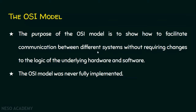If there are two different systems that want to communicate — for example, one running Windows and another running Linux — our protocols should convert the data in such a way that any operating system can understand it. So communication between different systems should be facilitated without requiring changes to underlying hardware and software. Whether one system uses Motorola architecture and another uses Intel architecture, it should not be a problem for computer communication. That is the purpose of this OSI model. Please note: the OSI model was never fully implemented — it is just a guideline.